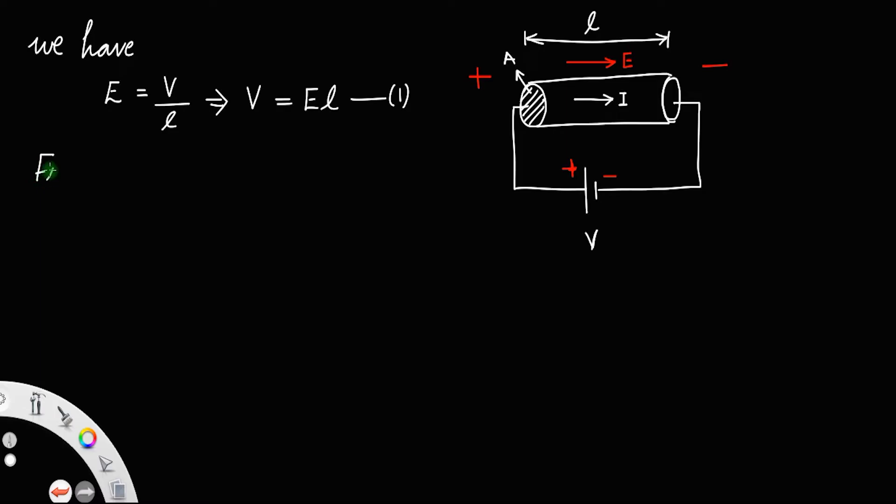From Ohm's law, the scalar form of Ohm's law, we have potential difference is equal to current times the resistance. You can substitute the value of EL for V, that is EL equals IR.